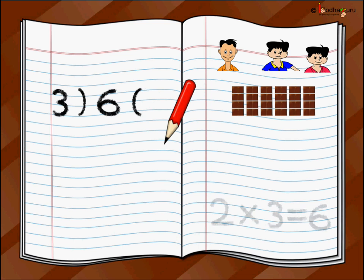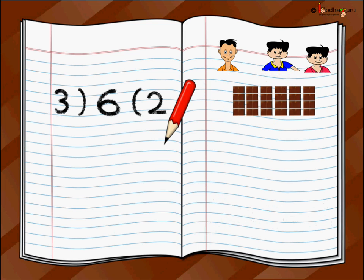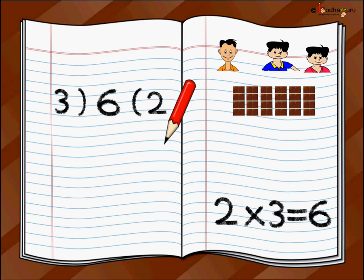So we made two groups of three chocolates each. And why three chocolates in each group? Because we have three children. So in every group there is one chocolate for every child. And two groups means each child will get two chocolates. Aman got two chocolates, his younger brother got two chocolates, and his youngest brother got two chocolates — one from each group. Now how many chocolates did we use to make equal groups? Yes, we used all six of them, so nothing was left.